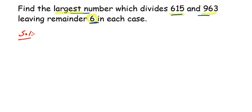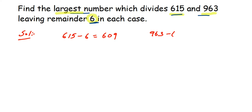615 minus 6 gives us 609, and similarly 963 minus 6 gives us 957. Now we need to find the HCF of 609 and 957, which will give us the largest number that divides them.